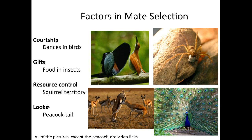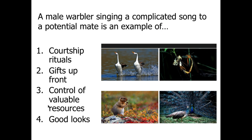Sometimes it's resource control — squirrels are territorial, and springbok and rams are as well. If males can force off other males and keep access to the territory for themselves, they also have access to the females that live there. Of course, looks are important too: the peacock tail is an extremely important part of mating, as the length of the tail and number of eye spots are strong indicators of male fitness. Courtship rituals is the factor where singing would be involved — that's a courtship ritual, not a resource or gift.